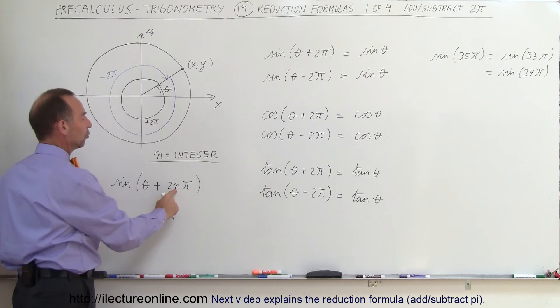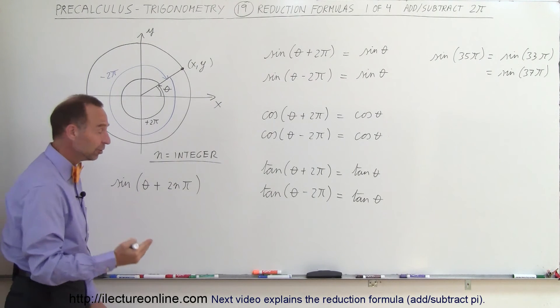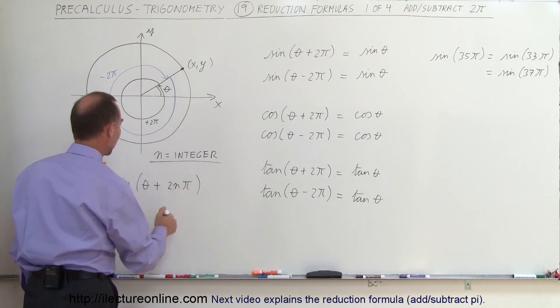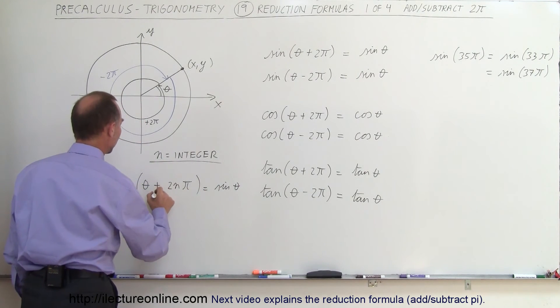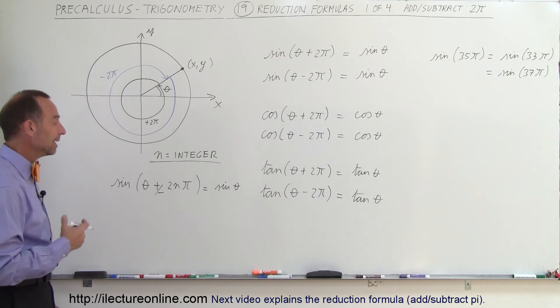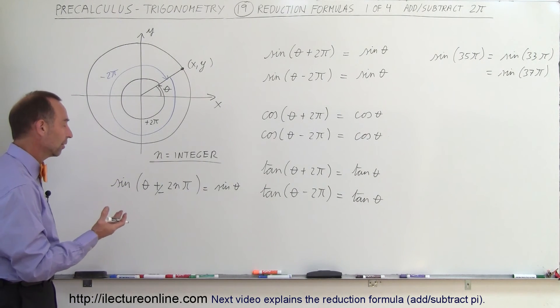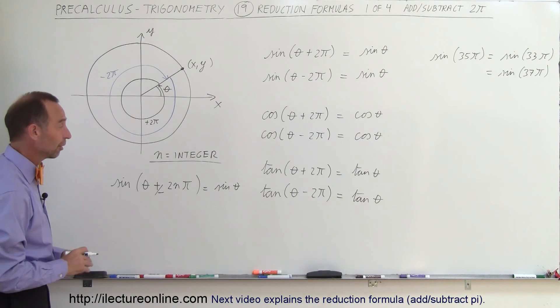If I have n equals 1 or 2 or 3, if I multiply times 2, I get an even number times π. This always equals the sine of theta. And of course, it's plus or minus—it doesn't matter. I can add or subtract an even number of π from an angle and I get the exact same trigonometric function.